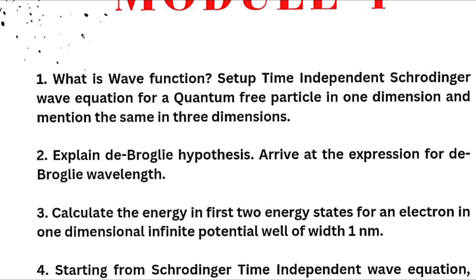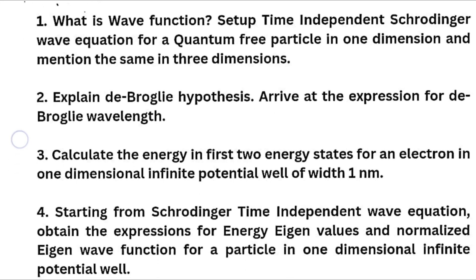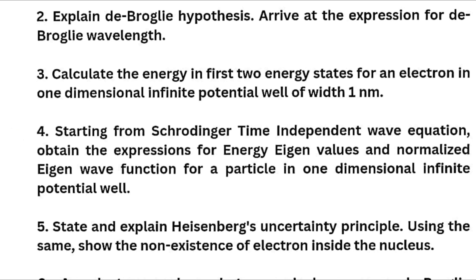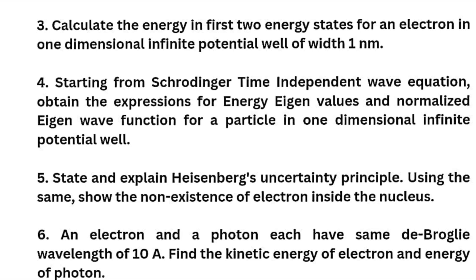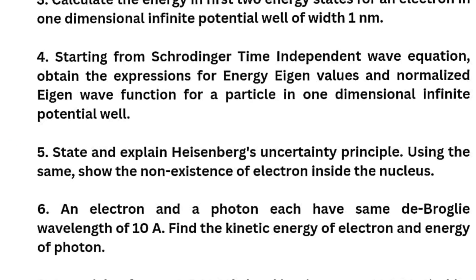Next we have explain de Broglie hypothesis. Arrive at the expression for de Broglie wavelength. This is the name. No need to worry about the pronunciation. It is de Broglie sometimes de Broglie hypothesis. Next we have here the numerical. Calculate the energy in first two energy states for an electron in one dimensional infinite potential well of 1 nanometer. Next we have starting from Schrodinger time independent wave equation, obtain the expressions of eigen values and a normalized eigen wave function for a particle in one dimensional infinite potential well.